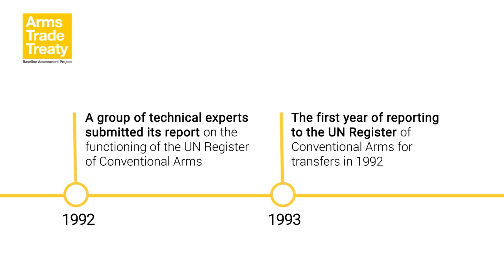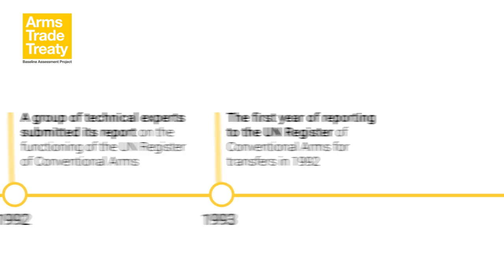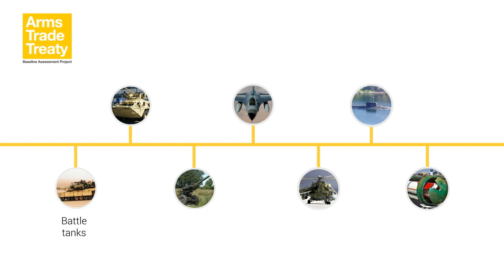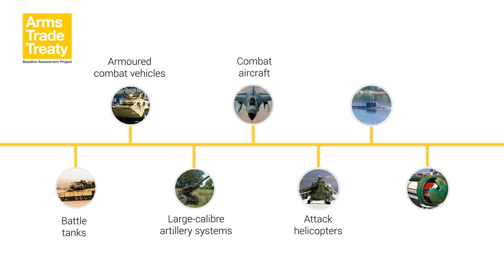The Register contains a list of country reports on annual arms exports and imports of major conventional weapons systems. Information contained in the annual reports includes the number of items, the state of origin, the intermediate locations, and a description of the transferred weapons. The Register initially included seven categories of weapons: battle tanks, armoured combat vehicles, large calibre artillery systems, combat aircraft, attack helicopters, warships, and missiles and missile launchers. Every three years, states convene a group of governmental experts to review the Register's scope and provide recommendations for improvement.